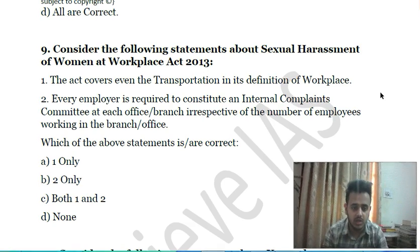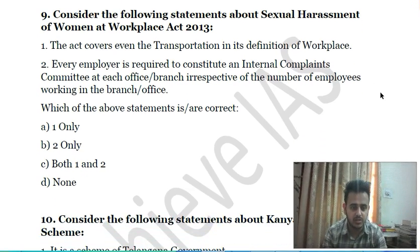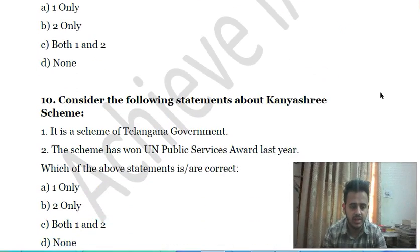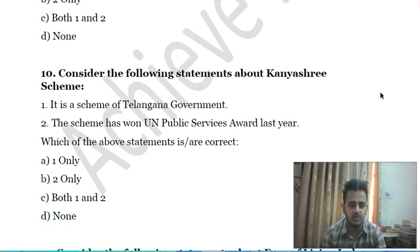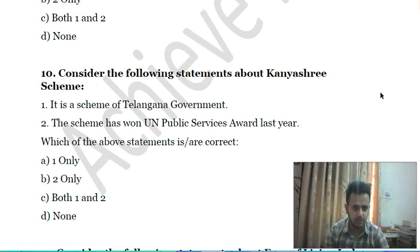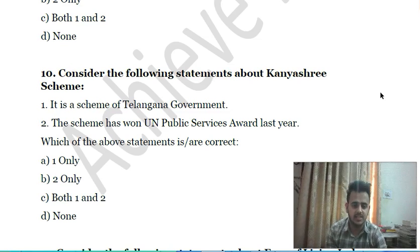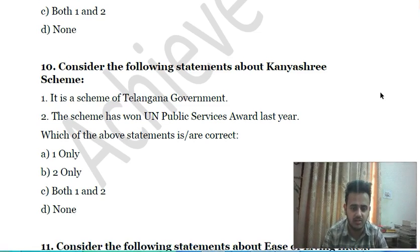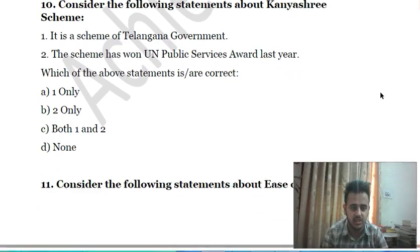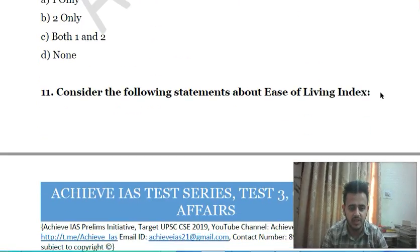Tenth question: consider the following statements about Kanyashree Scheme — first, it is a scheme of the Telangana government; second, the scheme has won the United Nations Public Services Award last year. Choose the correct statement.